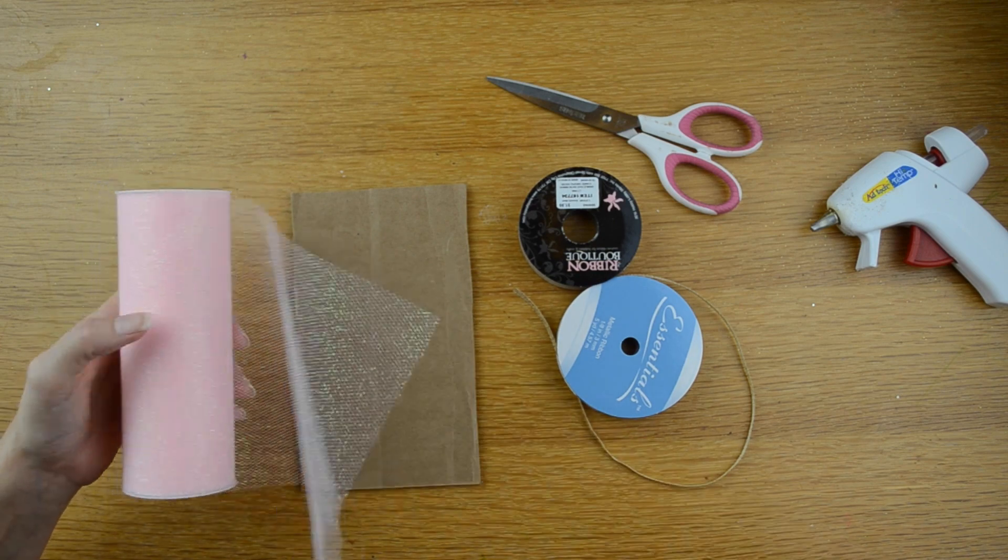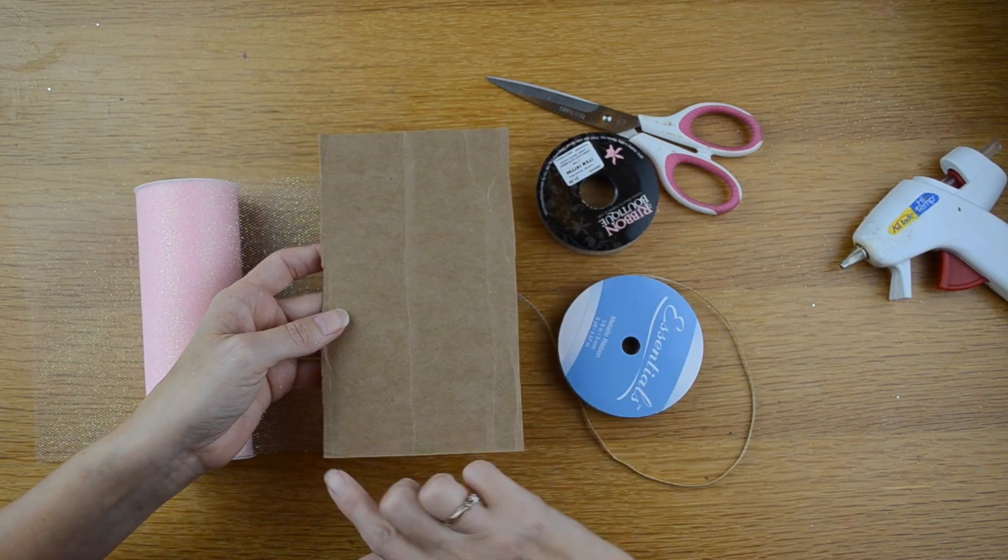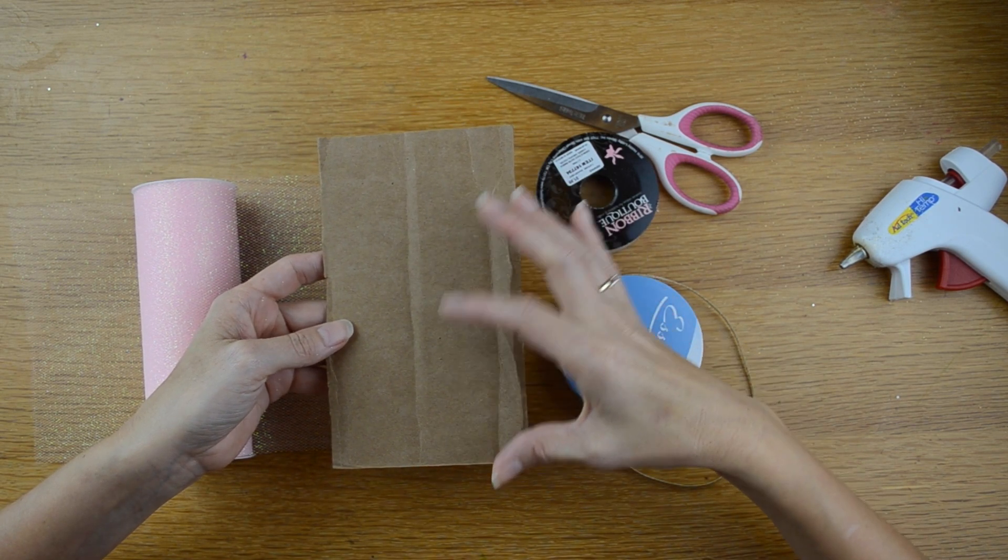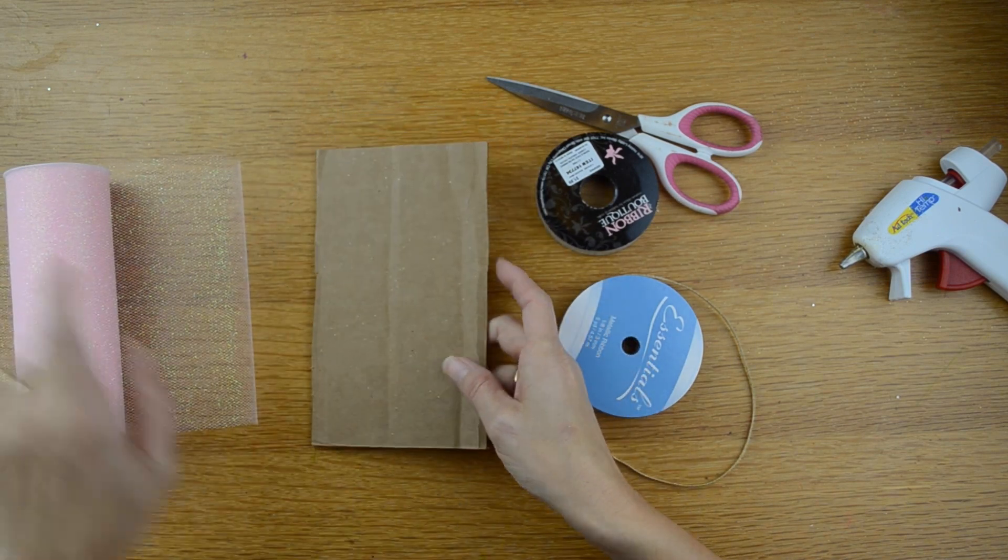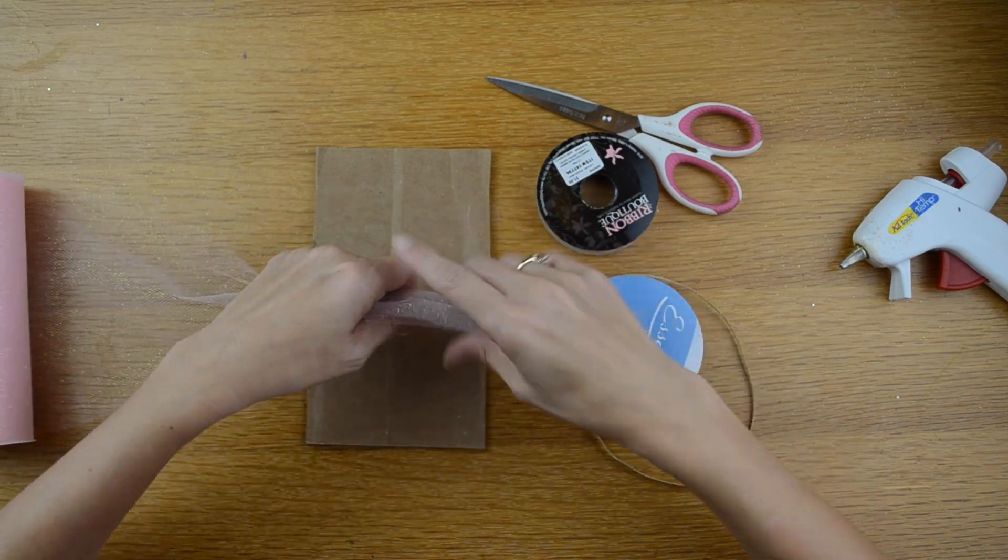So while the dowel rod dries, I'm going to go ahead and make the pom for the wand. I'm going to take my piece of cardboard and it is 7 inches by 4 inches. The length really doesn't matter so much with these smaller ones, as long as it's 4 inches across here.